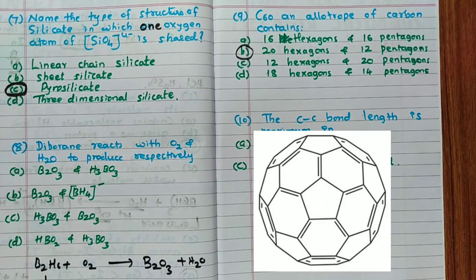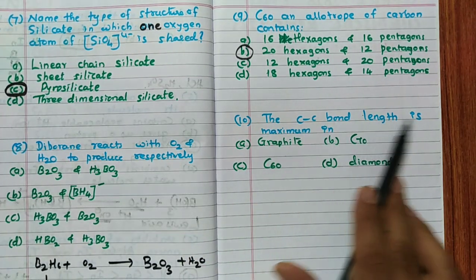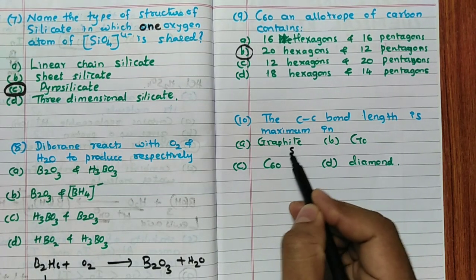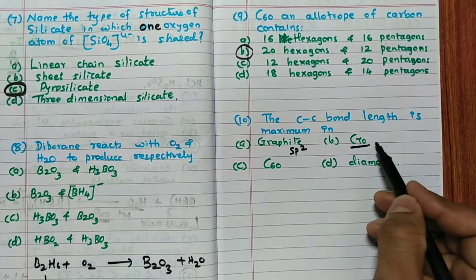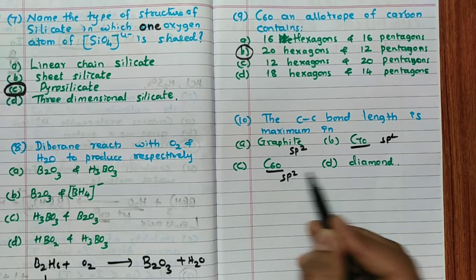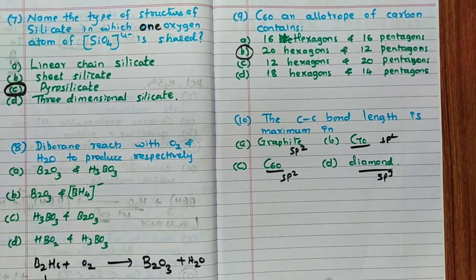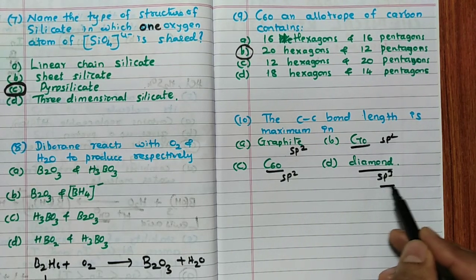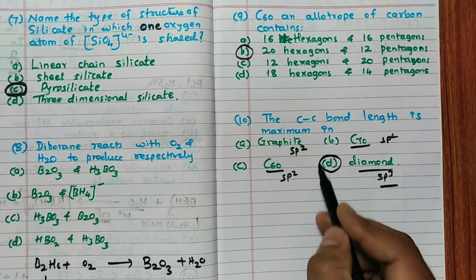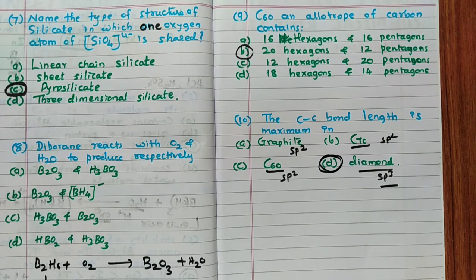The tenth question asks in which allotrope the C–C bond length is maximum. Graphite and fullerenes (C60, C70) are sp2 hybridized, having both single and double bonds. Diamond is sp3 hybridized with only single bonds. Since single bonds are longer than double bonds, the C–C bond length is maximum in diamond. The answer is D.